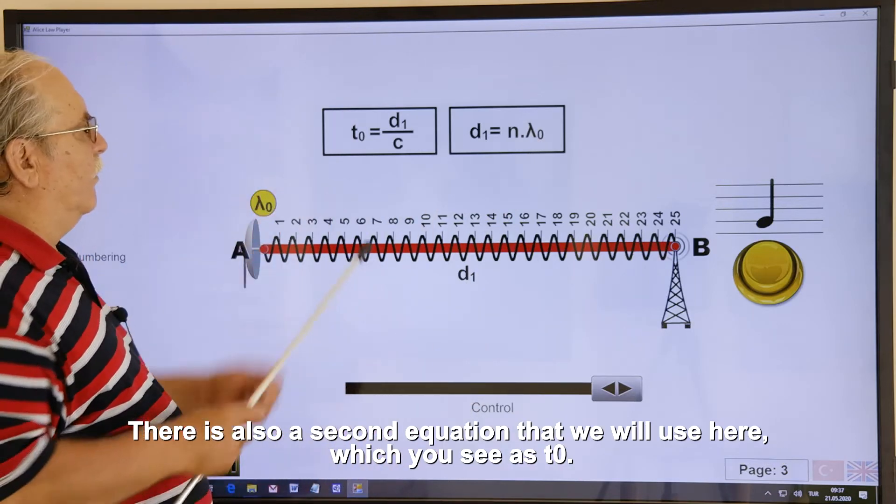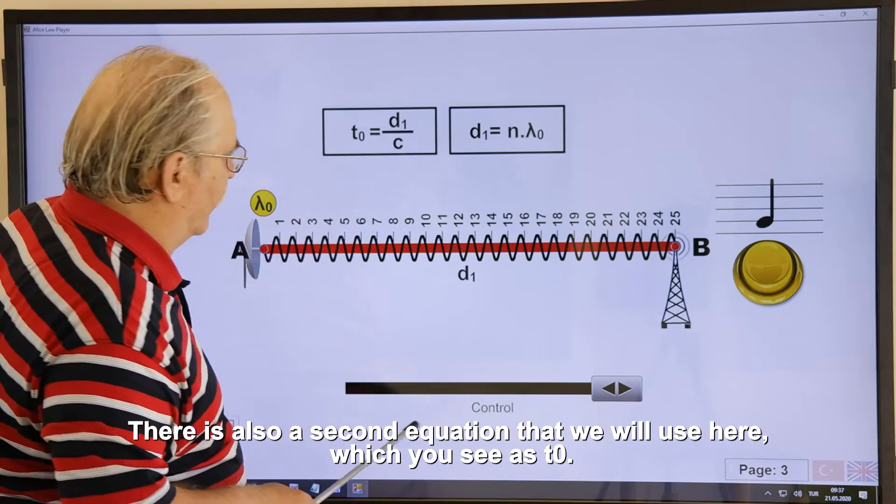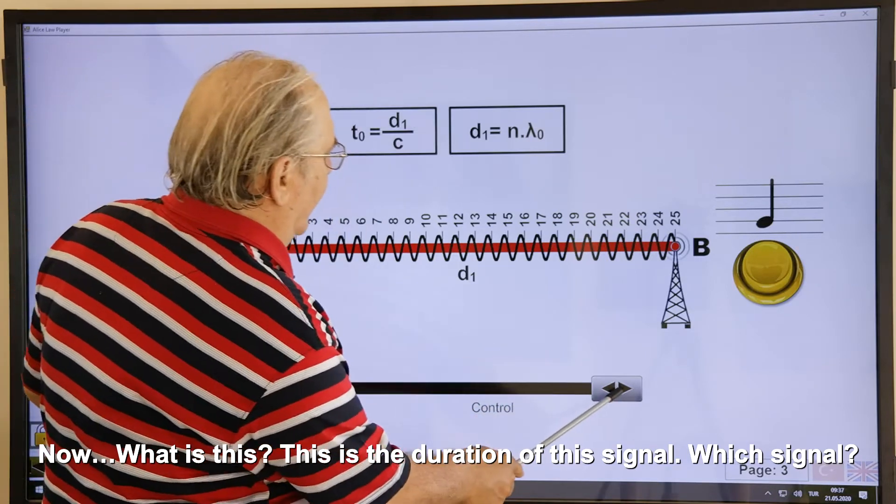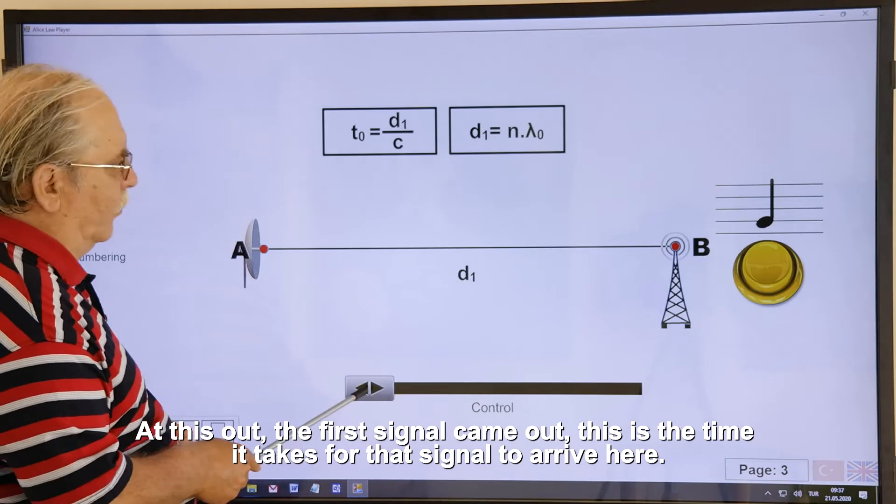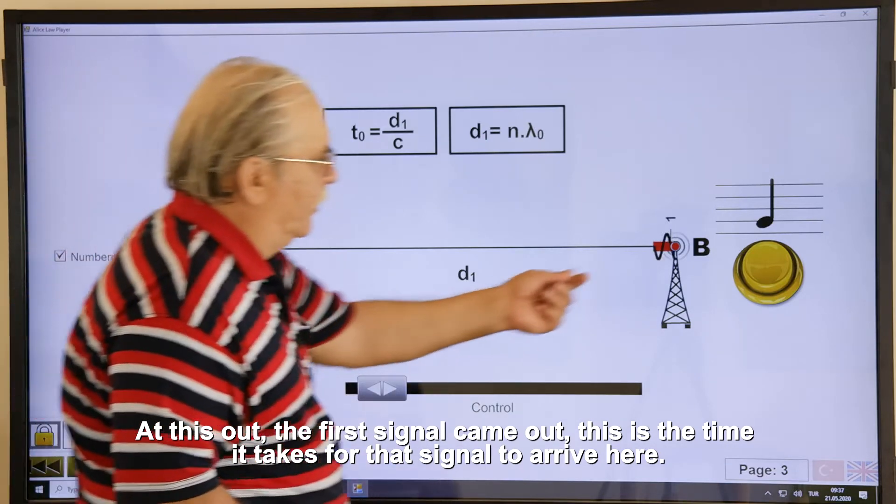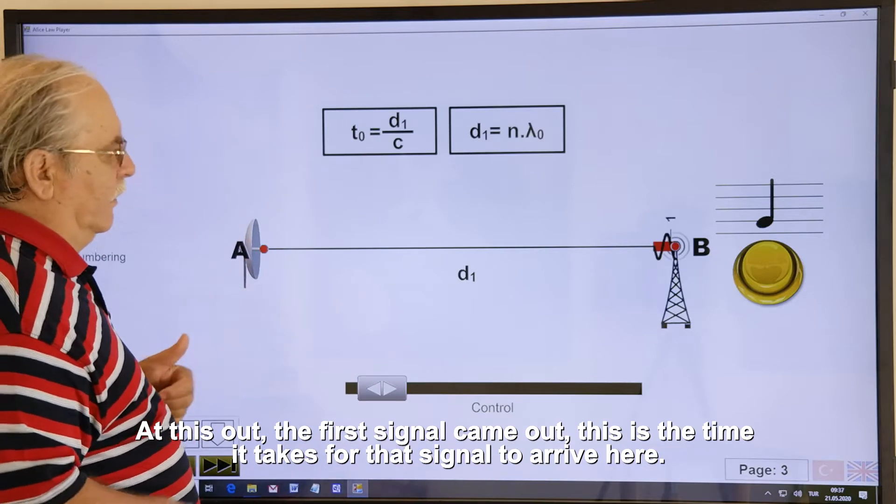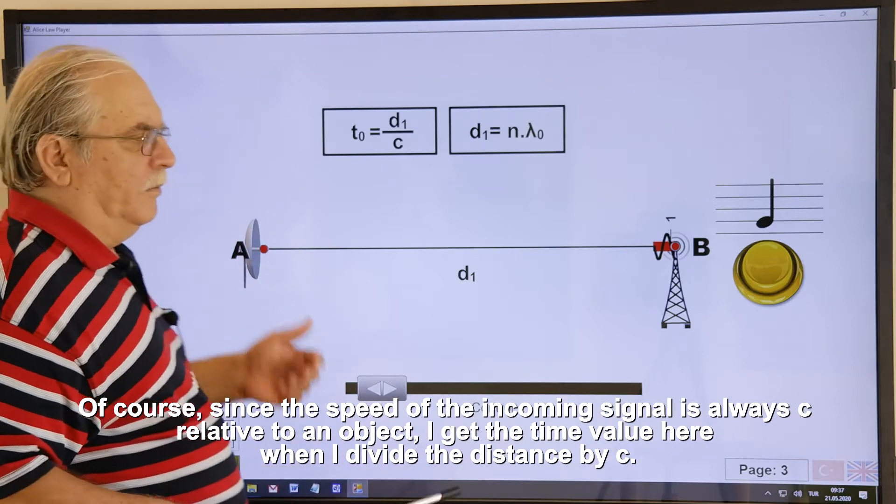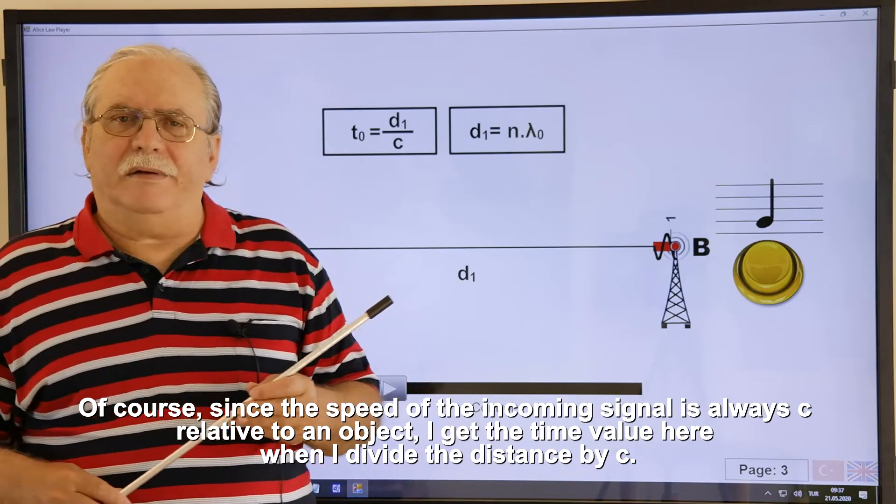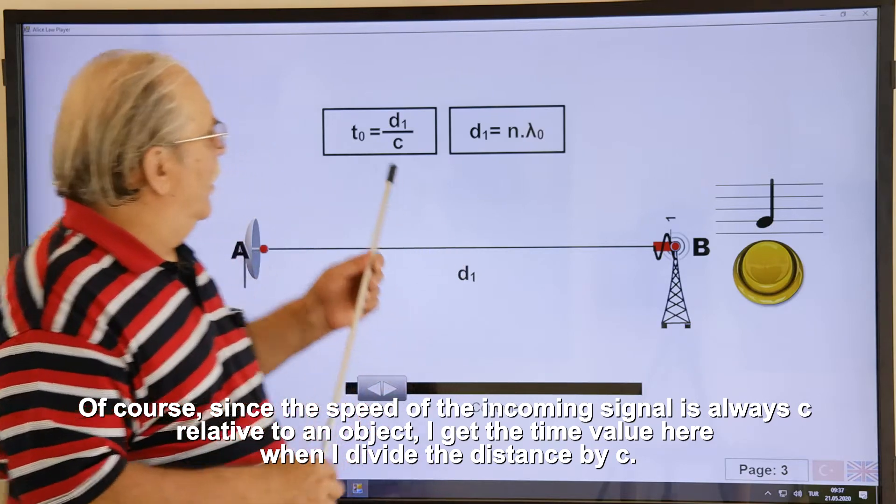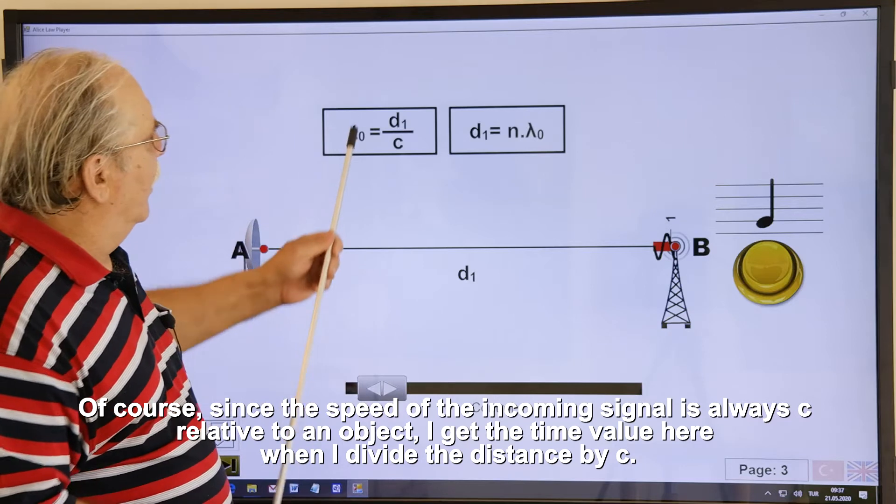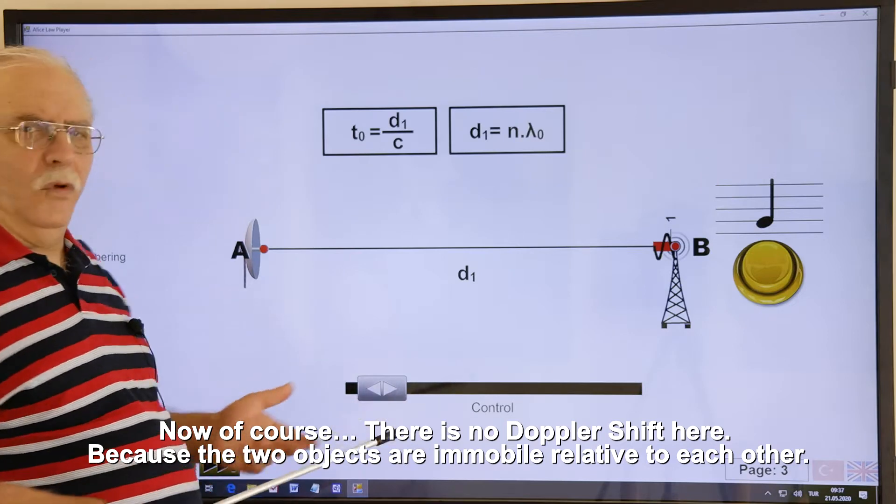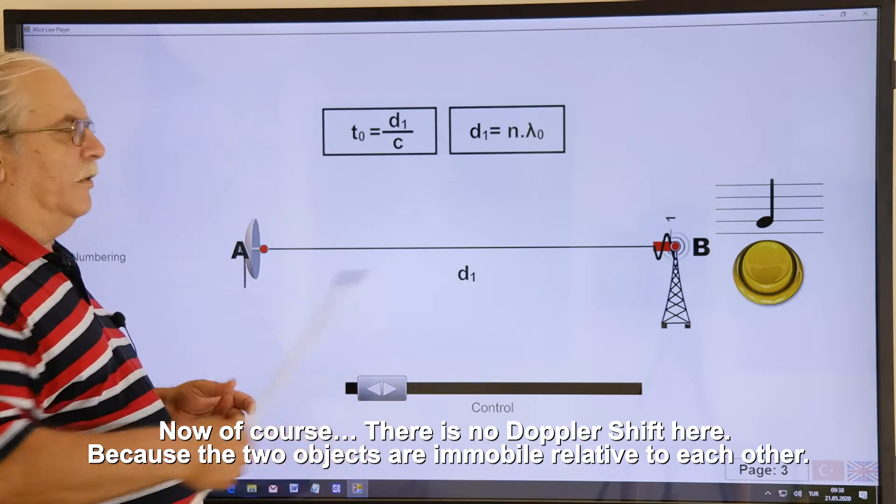Because the two objects are motionless relative to each other. Now this distance, how many of these wavelengths are there? The number n represents the number of these wavelengths. Here, there are 25 of them. 25 times lambda zero gives the distance here. There is also a second equation that we will use here. Which you see is T zero. What is this? This is the duration of this signal. At this out, the first signal that came out. This is the time it takes for that signal to arrive here. Of course, since the speed of the incoming signal is always C relative to an object, I get the time value here, when I divide the distance by C. Now of course, there is no Doppler shift here. Because the two objects are immobile relative to each other.